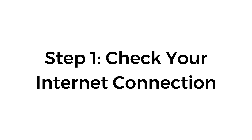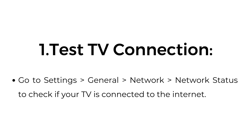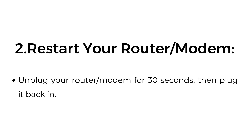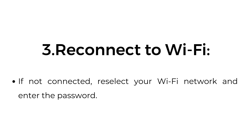Step 1: Check your internet connection. Test TV connection by going to Settings > General > Network > Network Status to check if your TV is connected to the internet. Restart your router or modem by unplugging it for 30 seconds, then plug it back in. If not connected, reconnect to Wi-Fi by reselecting your Wi-Fi network and entering the password.